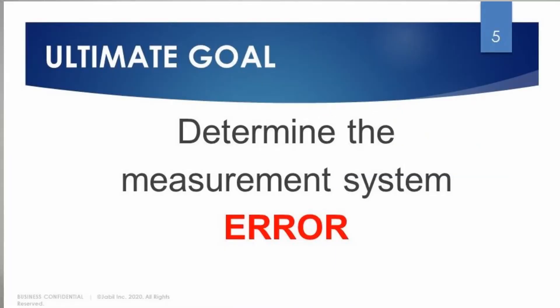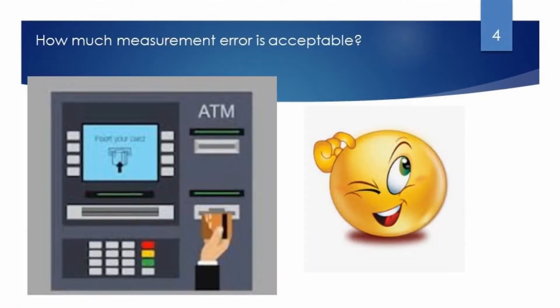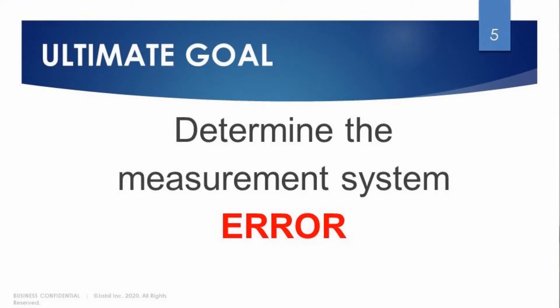Measurement system analysis is a tool that we use to verify the accuracy of a measurement system. Just imagine that you go to the ATM to withdraw some money and the measurement system — the ATM — has a 5% error. This error can happen in real life. So how can we determine how much error a measurement system has? That is the goal of a Gauge R&R tool.